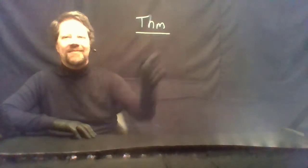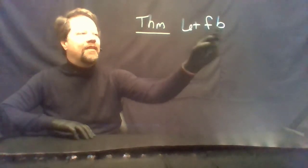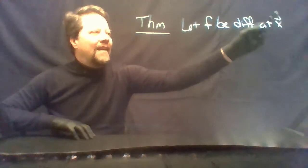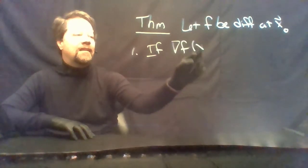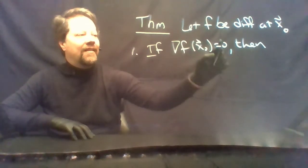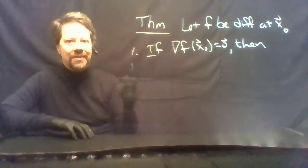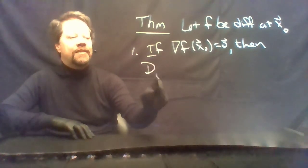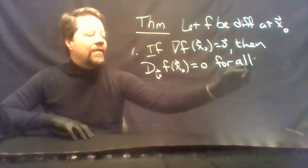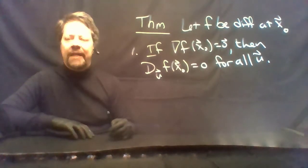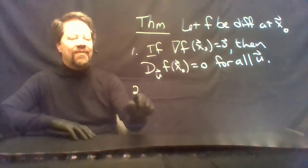We not only have the new object, the directional derivative, we also have another new object: the gradient. It would be nice to know something geometric about this gradient. We have the following theorem: let f be differentiable at x₀. If the gradient at x₀ equals the zero vector, then the directional derivative of f at x₀ will be the scalar zero for all unit vectors u. So the directional derivative will be zero in every direction, provided the gradient is the zero vector.